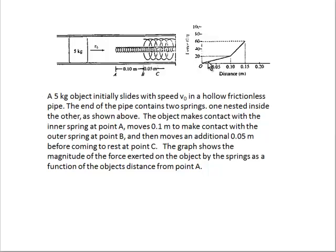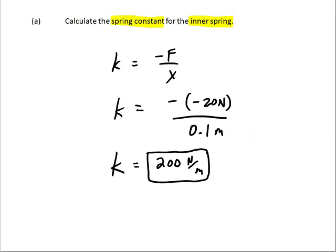Now we can get that from this graph right here, 20 over 0.1. From the Hooke's Law equation, spring constant k equals opposite of f, opposite of force. Now the force is to the left,